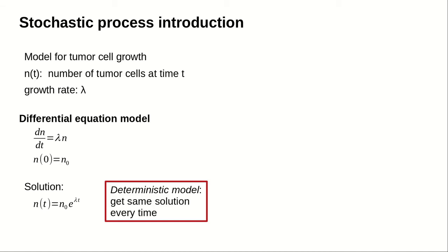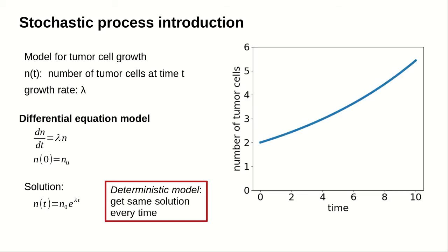This model is what we call a deterministic model. There is no source of randomness, so we get the same answer every time. We can plot the number of tumor cells n versus time — it is a nice, smoothly growing cell population.